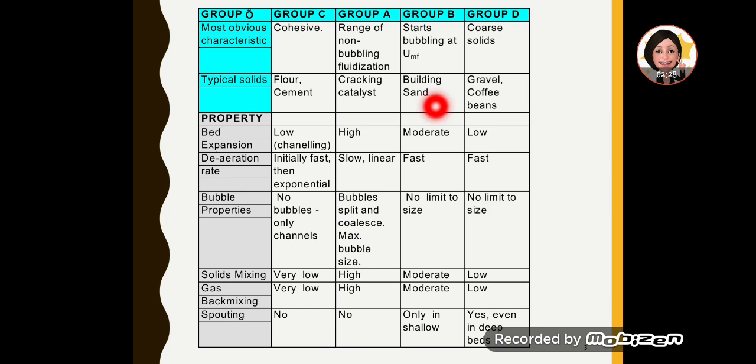Then we have group B powders which will start bubbling at UMF. That is the most obvious characteristic. The types of solids examples are sand, building sand.